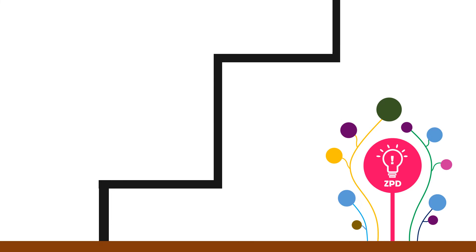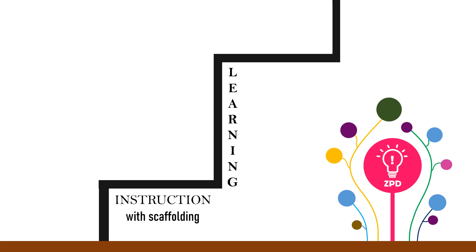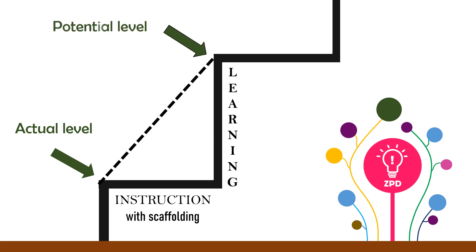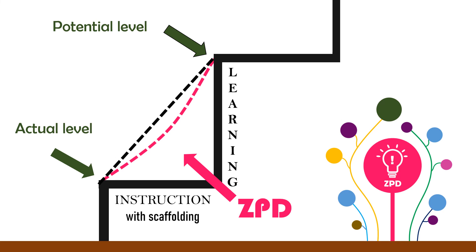Now let's use this figure to make it more understandable. This is the instruction with scaffolding, and this is the learning. This one is the actual level, or the level that the learner achieves when alone. And this is the potential level, the level that the learner achieves with the assistance of the teacher or a more advanced peer. While this dotted line is the zone of proximal development — the difference between what a child can accomplish alone and what she can accomplish with the guidance of another.